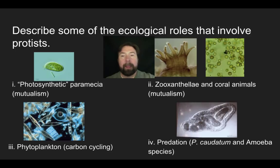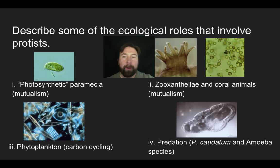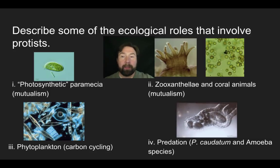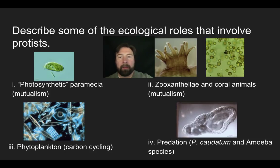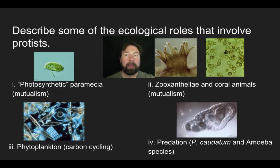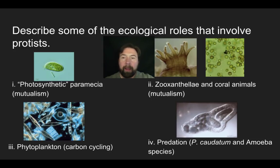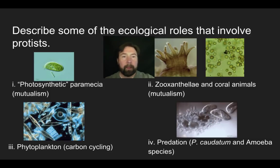Another interesting ecological role we see with protists is that of an amoeba. I've got a video of an amoeba that's engulfed a couple of paramecium caudatum. As it engulfs those paramecium, it releases digestive enzymes, breaks them down, and reduces them to macromolecules it can absorb into its body. This is a predatory action by a protist — so we have both producer and consumer, as well as mutualistic relationships, shown in these ecological roles.